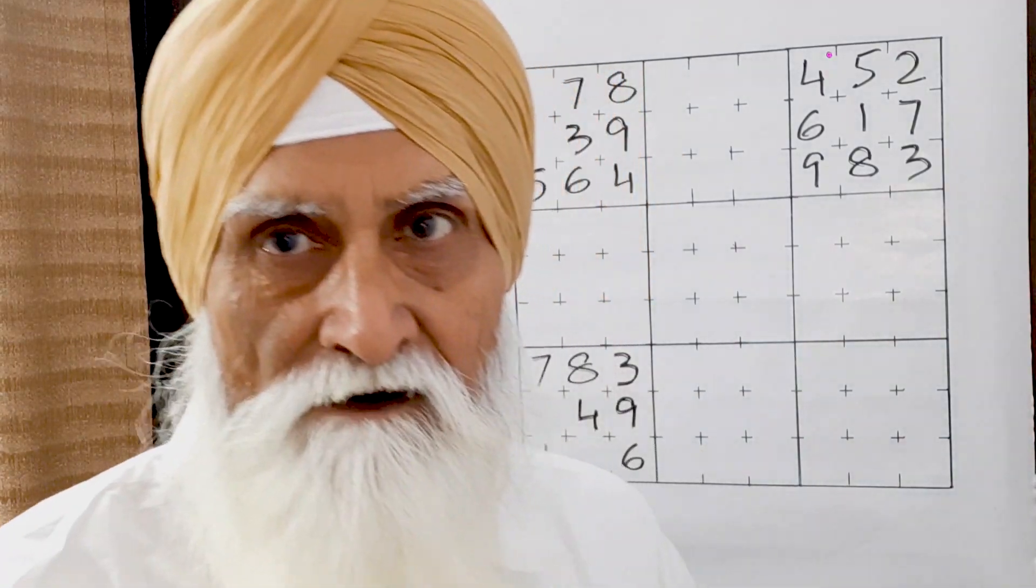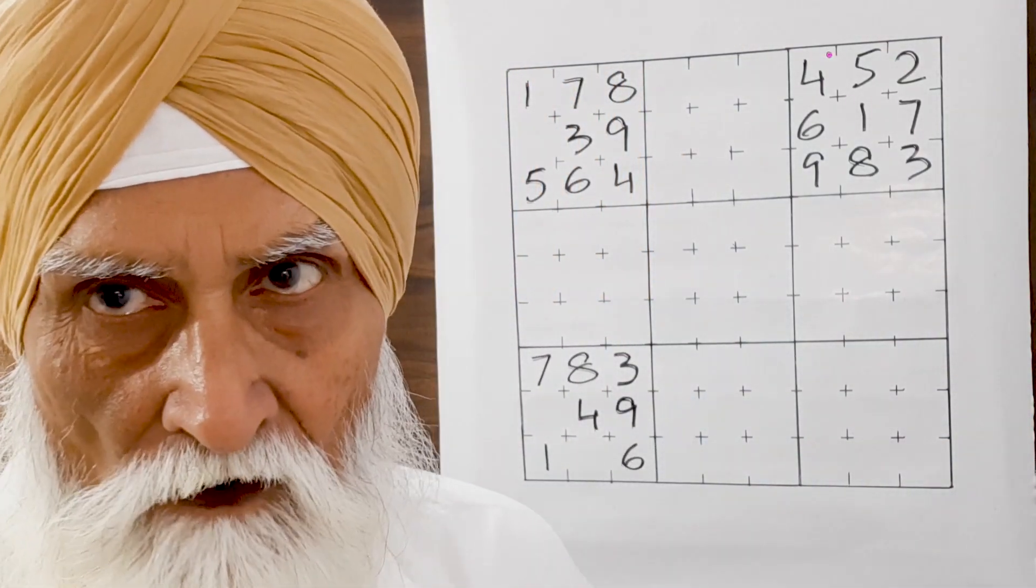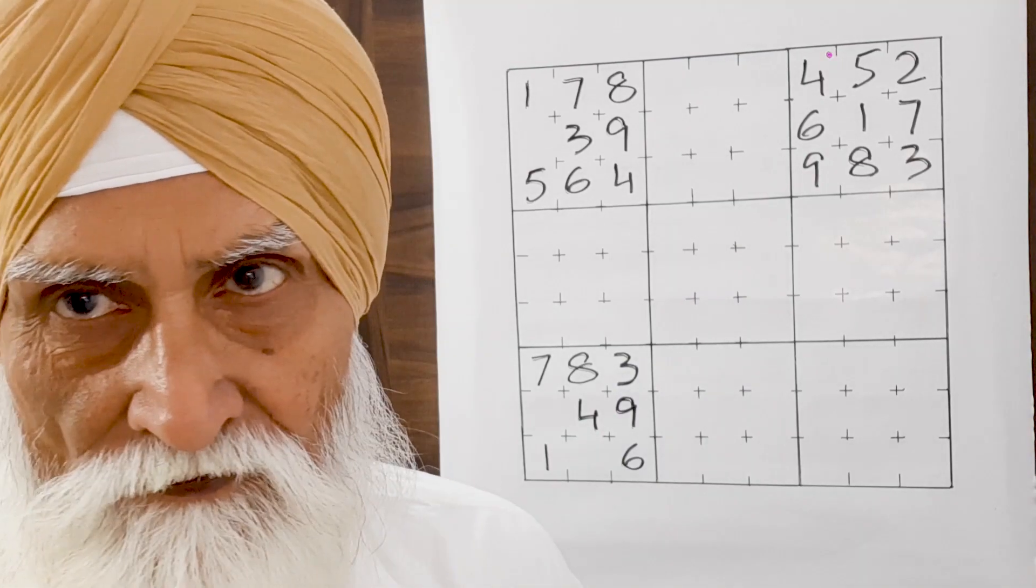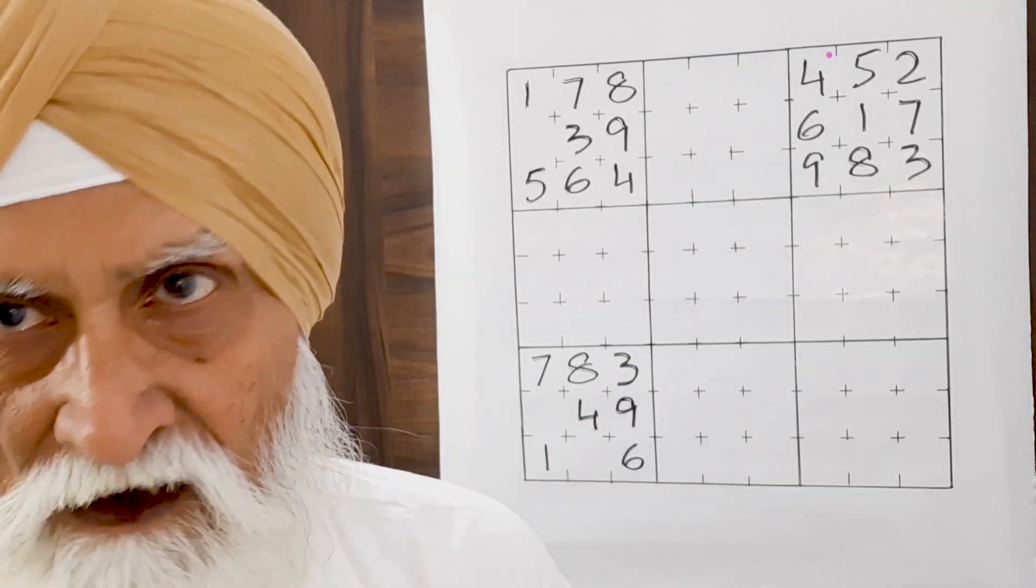On one A4 size sheet, you can make four grids of Sudoku on one side. On the other side, you can draw another four grids.